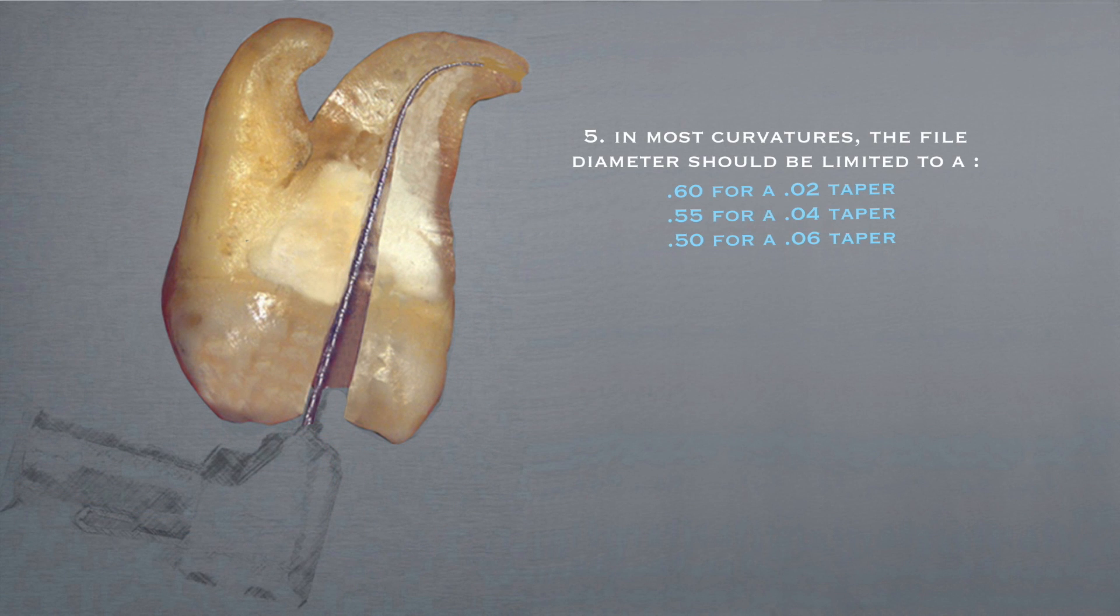The last new principle we've added to our list is number five, which states in most curvatures, the file diameter should be limited to a 60 for an 02 taper, a 55 for an 04, and a 50 for an 06.